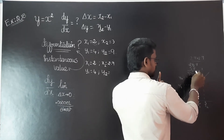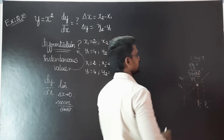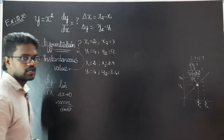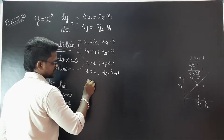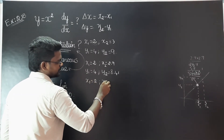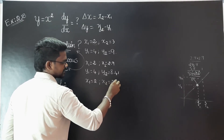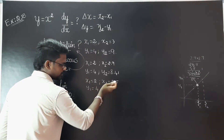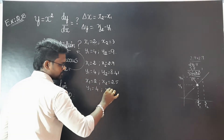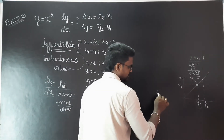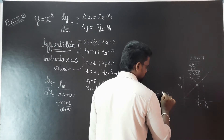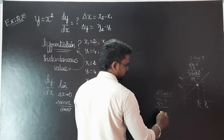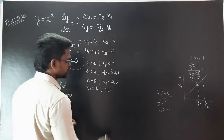Now what we are doing — at x equals 2, the value is 4. Now we are doing x2 equals 2.5. So 2.5 into 2.5 is 6.25.